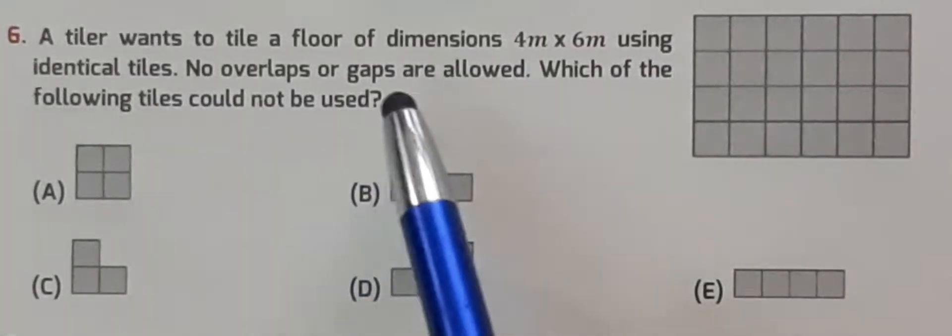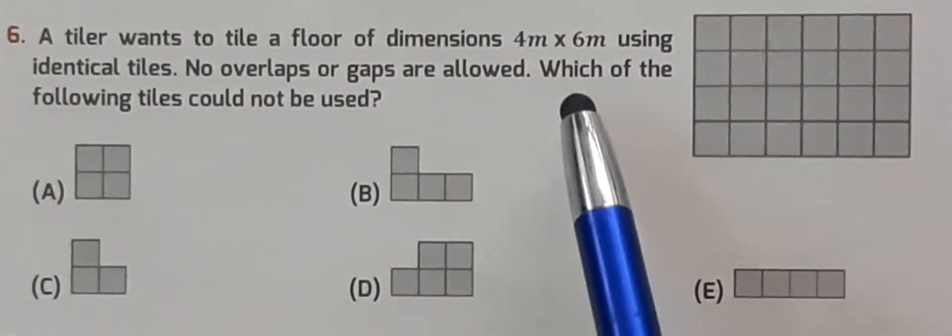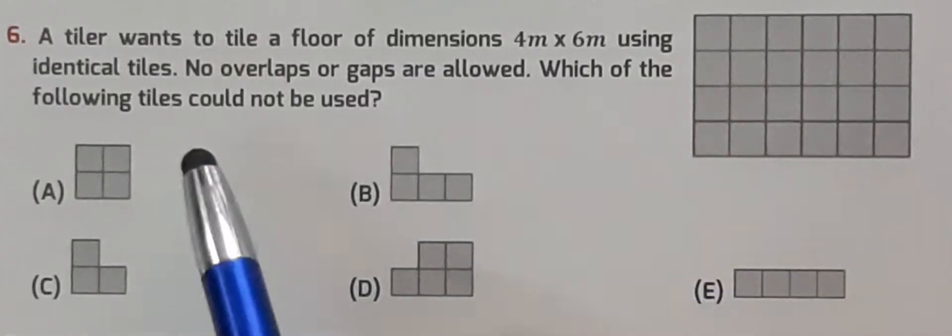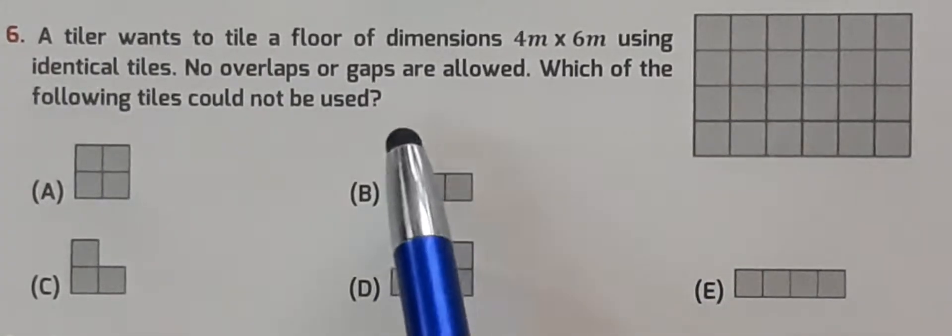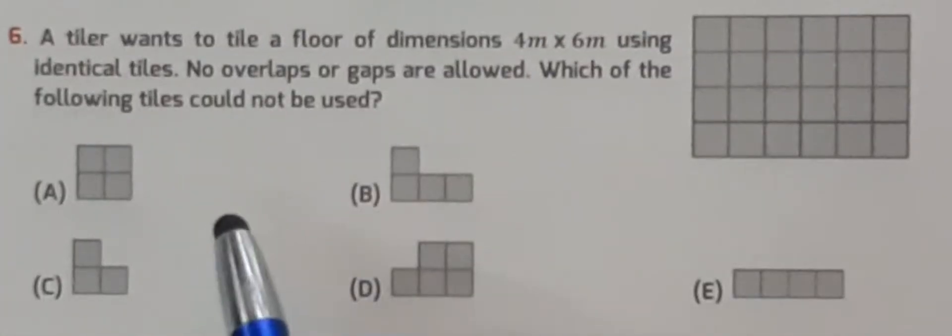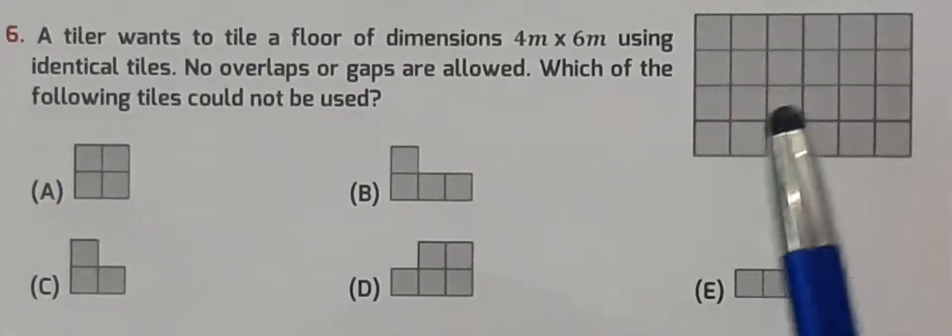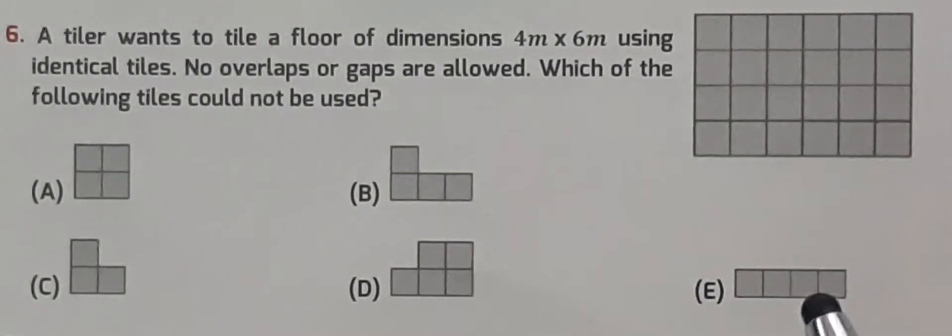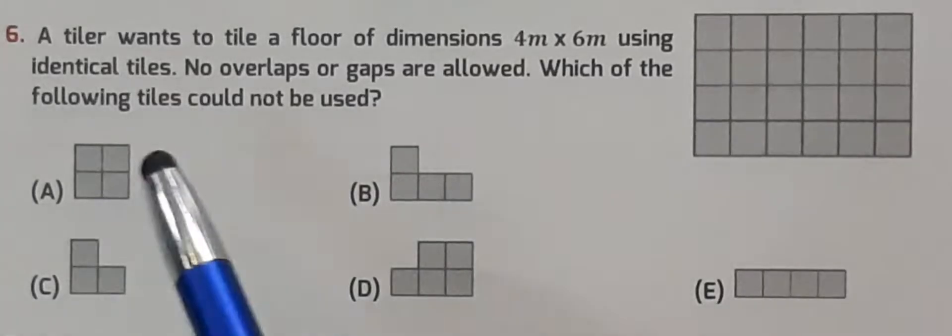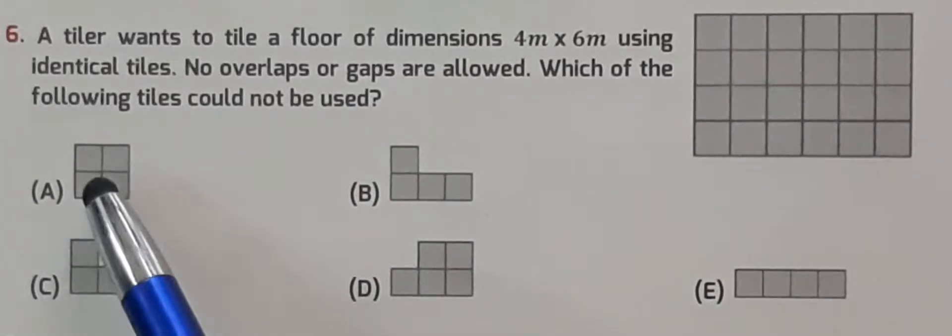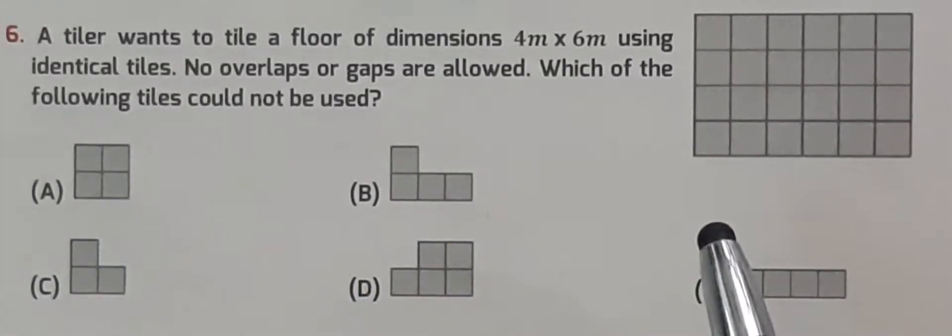A tiler wants to tile a floor of dimensions 4m x 6m using identical tiles. No overlaps or gaps are allowed. Which of the following tiles could not be used?